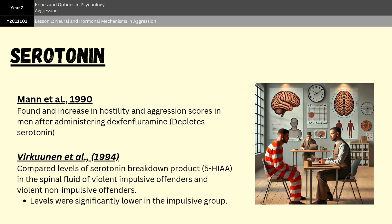The role of serotonin in aggression has been investigated in various studies. For example, Mann et al. in 1990 gave 35 healthy participants dexfenfloramine, which depletes serotonin. They then used a questionnaire to assess hostility and aggression levels, and found that the treatment in males was associated with an increase in hostility and aggression scores. Furthermore, Verkunen et al. in 1994 found that violent impulsive offenders had significantly lower levels of a serotonin breakdown product called 5-HIAA in their spinal fluid, compared to violent non-impulsive offenders, highlighting serotonin's role in aggression regulation.